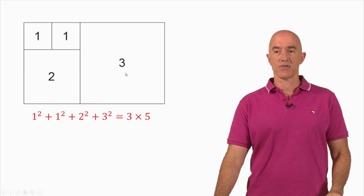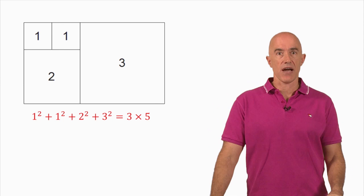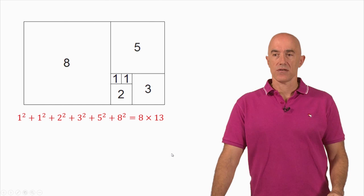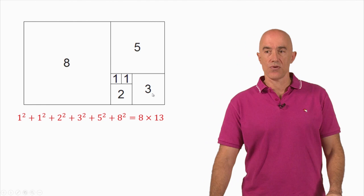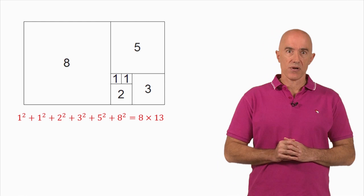So 1 squared plus 1 squared plus 2 squared plus 3 squared adds up to 15, and that equals 3 times 5 — this is a 3 by 5 rectangle. We keep adding; here we've added up to the Fibonacci number 8, covering the first six Fibonacci numbers: 1, 1, 2, 3, 5, 8 — added as a spiral.